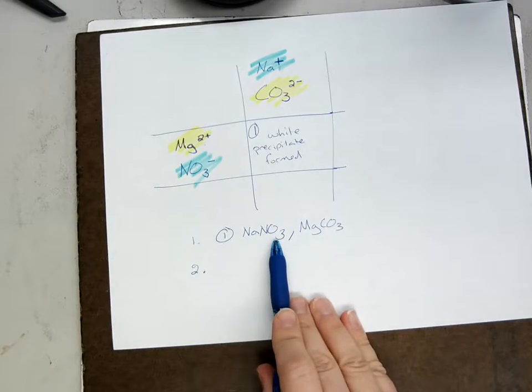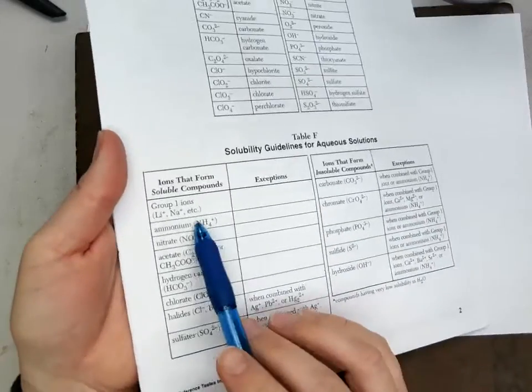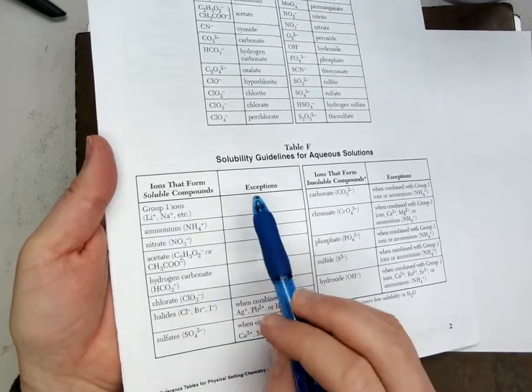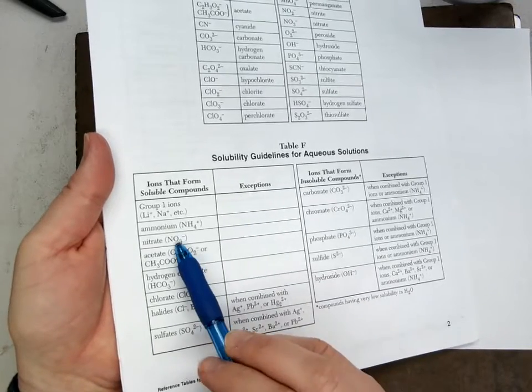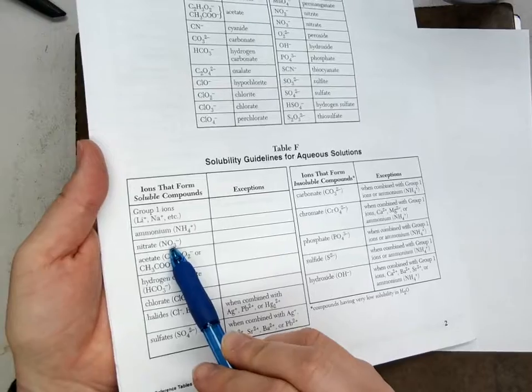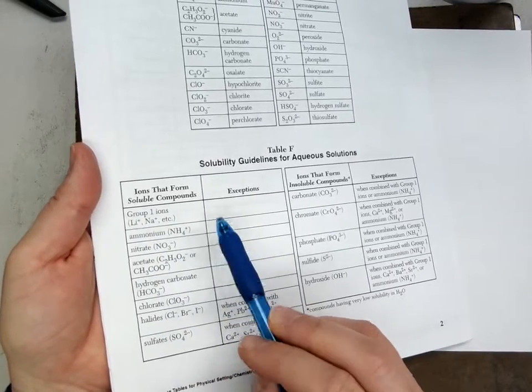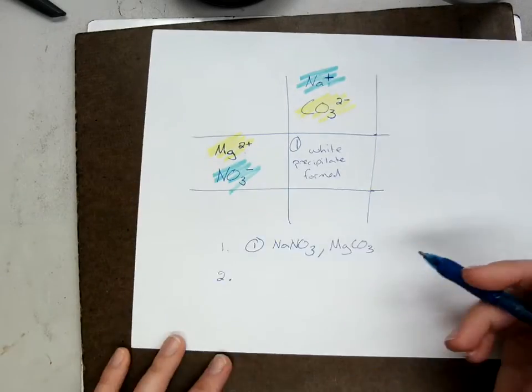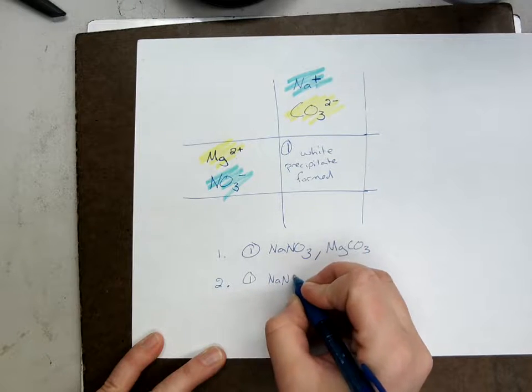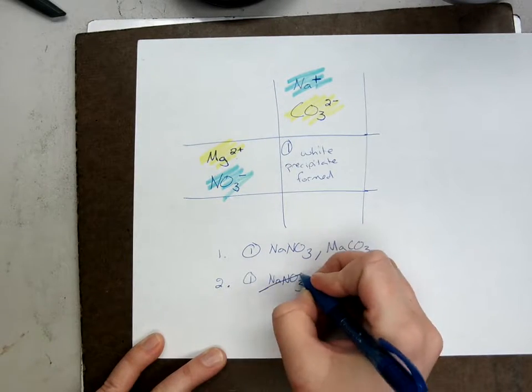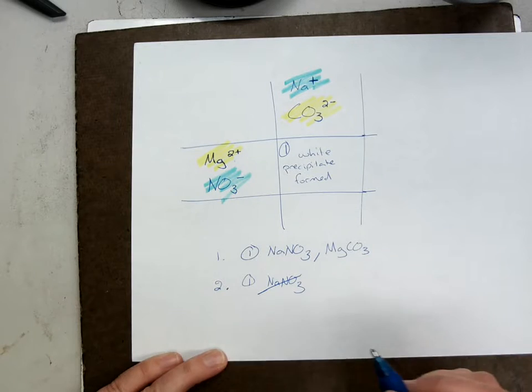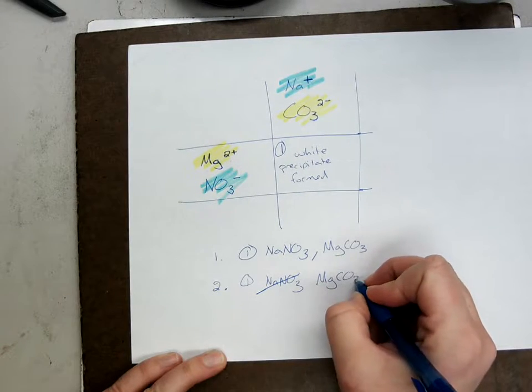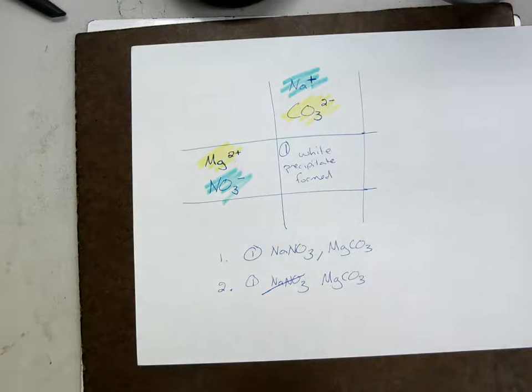Okay, see the Na? See the NO3. Those guys are involved in our very first couple of rules on table F. Na is a group ion. He is soluble no matter what. Here's nitrate. Not that I need this rule, but there is a nitrate rule. He's soluble no matter what. Either one of these would have gotten me the information that sodium nitrate is soluble. So sodium nitrate is not the precipitate because he's soluble. He's dissolved. You can't see him. It must be that magnesium carbonate, the other guy, he must be the precipitate, the white solid.